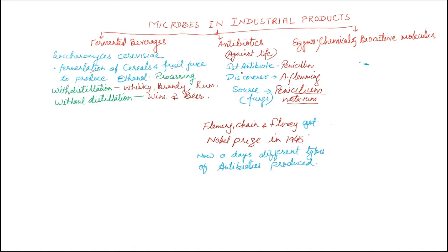Antibiotics means 'against life' — 'anti' means against, 'biotics' means life. When pathogens enter our body and cause disease, they can be killed by antibiotics. The first antibiotic, penicillin, was discovered by Alexander Fleming from the fungi Penicillium notatum during 1944-45, and was used to treat wounded soldiers during the Second World War.